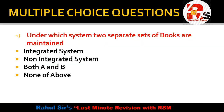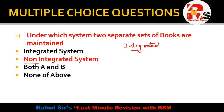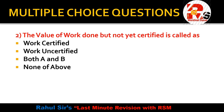Question number 1: Under which system are two separate books of accounts maintained? The answer is the non-integrated system. Remember — when two separate books of accounts are maintained, it is called the non-integrated system. When a single set of books of accounts is maintained, it is called the integrated system. Keep your attention — very important MCQ.